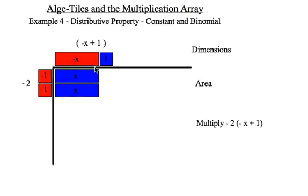And now, negative 1 times positive 1 gives me negative 1. So, if I count this up, I have two x's and two negative 2's. So, my result here is 2x minus 2.